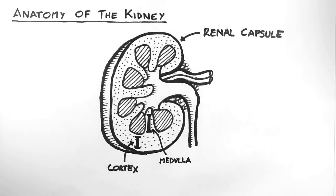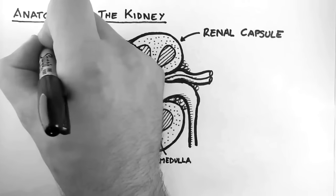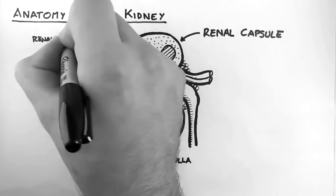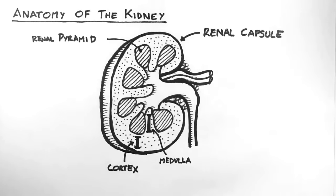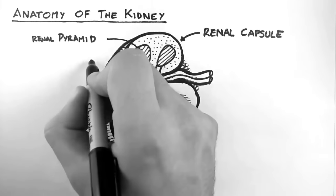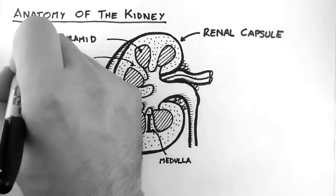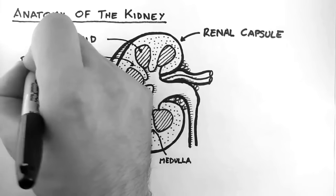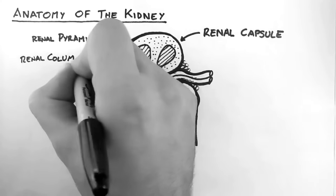Macroscopically, we can see these renal pyramids, which are slightly darker than the surrounding cortex. We can also see these renal columns, which separate the pyramids from one another. These columns carry blood vessels to the cortex.